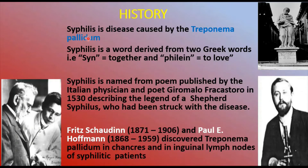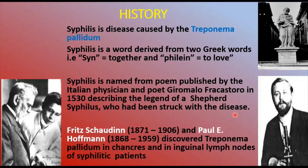The word 'syphilis' was derived from two Greek words: 'sym' meaning together and 'philine' meaning to love. The name comes from a poem published by Italian physician and poet Girolamo Fracastoro in 1530, describing the legend of a shepherd named Syphilis who had been struck with the disease.